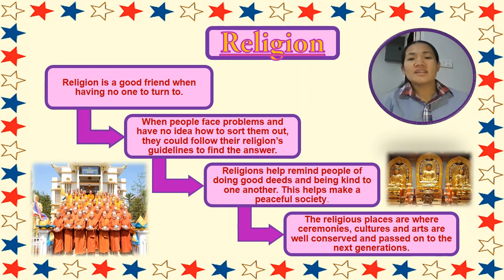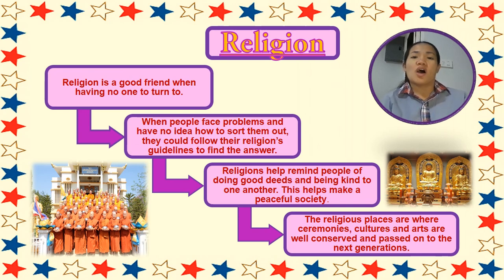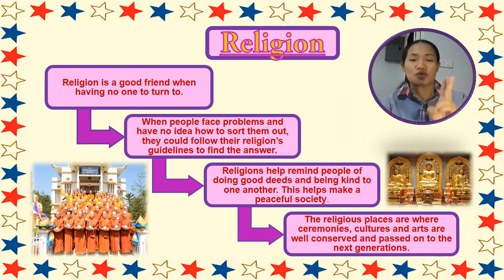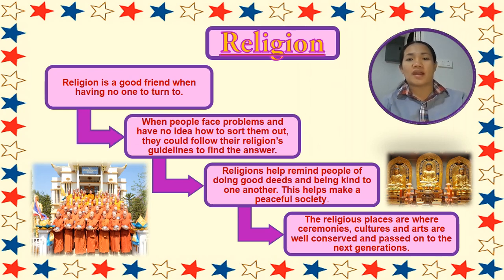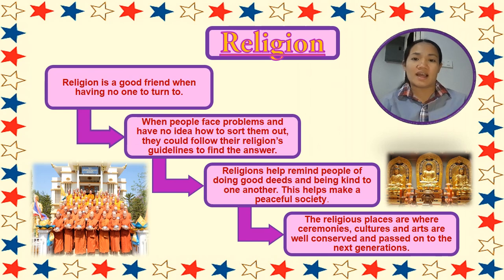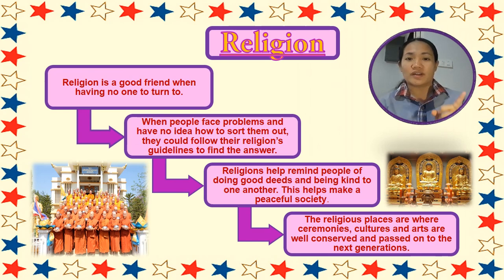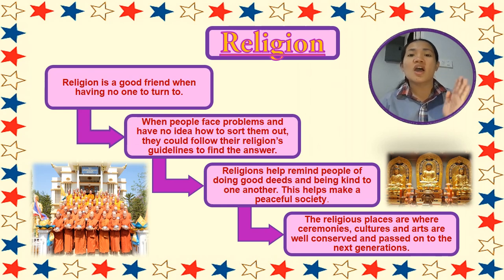So class, if you can remember, in our week 4, we have the 5 social institutions of Thailand and we have already discussed the first 2 social institutions last week. And now, in this week, we are going to study the 3 more social institutions in Thailand. The first one we are going to study this week is about religion. So we all know that in Thailand, your religion is Buddhism.